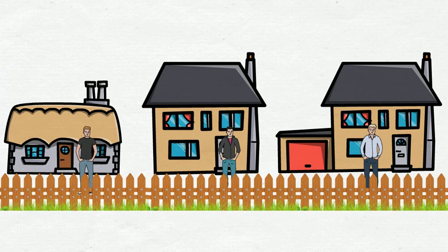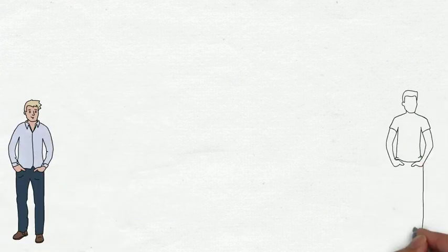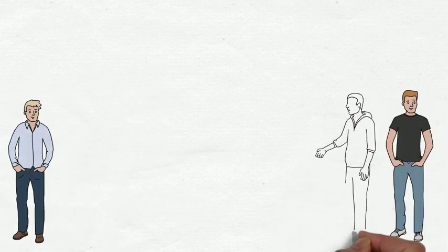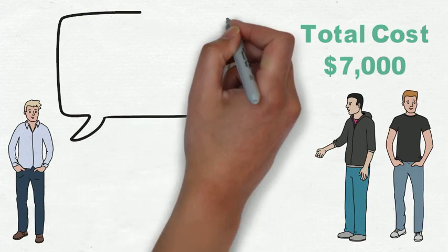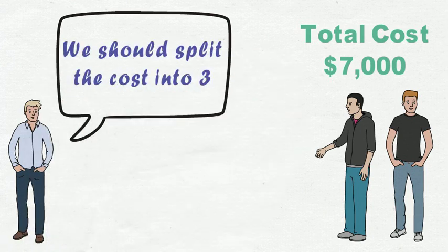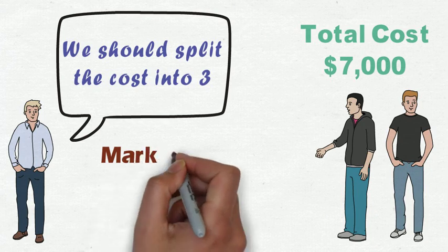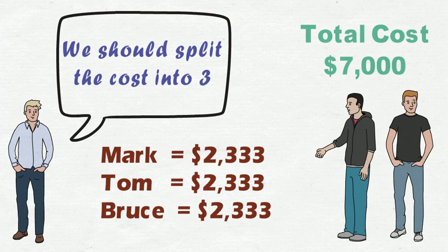Everybody agreed that it was a good idea. Bruce went to ask around how much the fence would cost them. After a few calculations, they learned that the work would cost $7,000. Bruce suggested that since they are sharing it together, they should split the cost equally. They should divide the $7,000 by three, and each of them will pay $2,333.